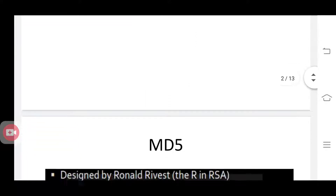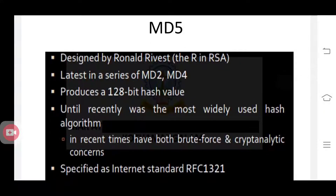Hi everyone. Now we can discuss the next hash algorithm, that is MD5. We had already discussed in the previous video the first hash algorithm, SHA-1. In this video you can study about this MD5 Message Digest algorithm, which is a hash algorithm. It is designed by Ronald Rivest, has two previous versions MD2 and MD4, and it produces a 128-bit hash value known as the message digest. It is specified as the internet standard RFC 1321.